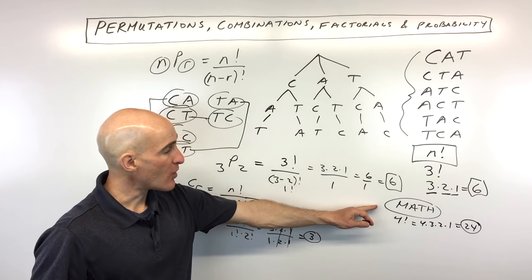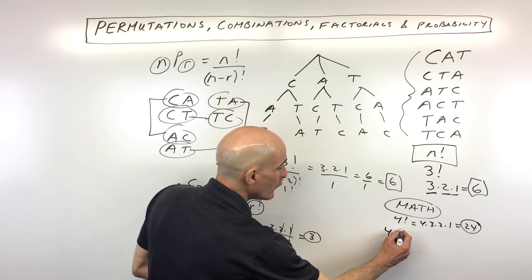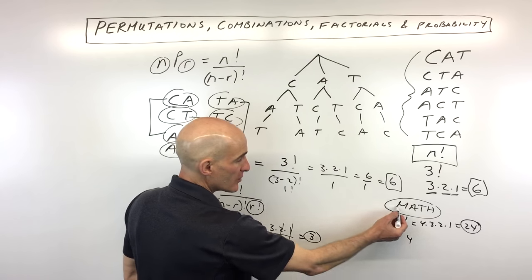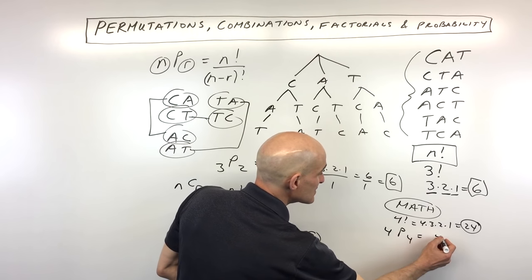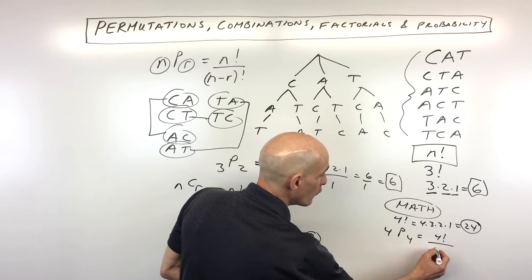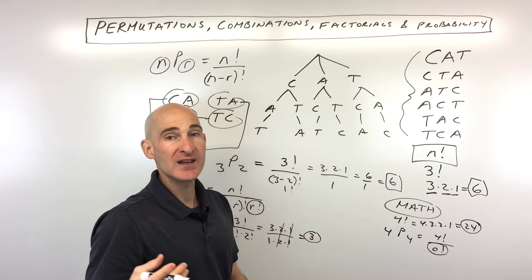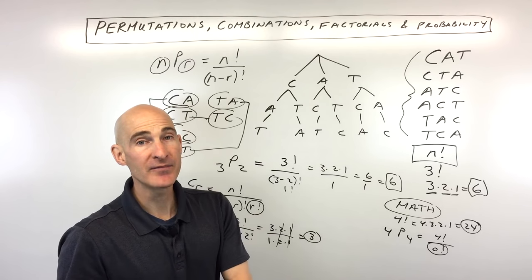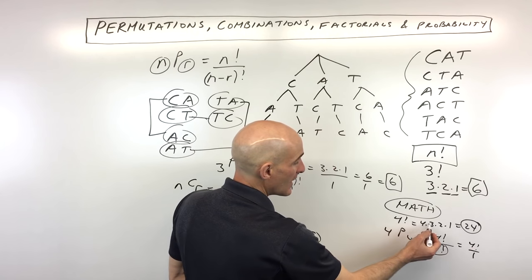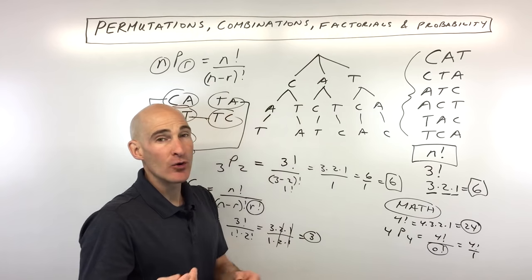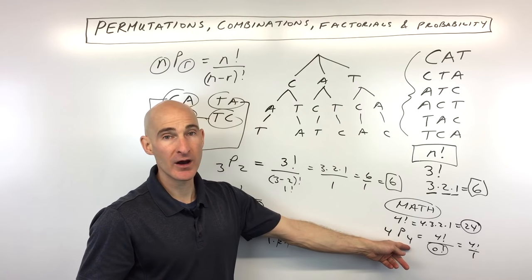Another way to do this problem is to use the permutations formula NPR, specifically 4P4 — out of four letters, we're picking all four. Using our formula: four factorial over (four minus four) factorial, which is zero factorial. Zero factorial is equal to one — you'll want to memorize that. So we end up with just four factorial, which is 24. Two different methods, same result.